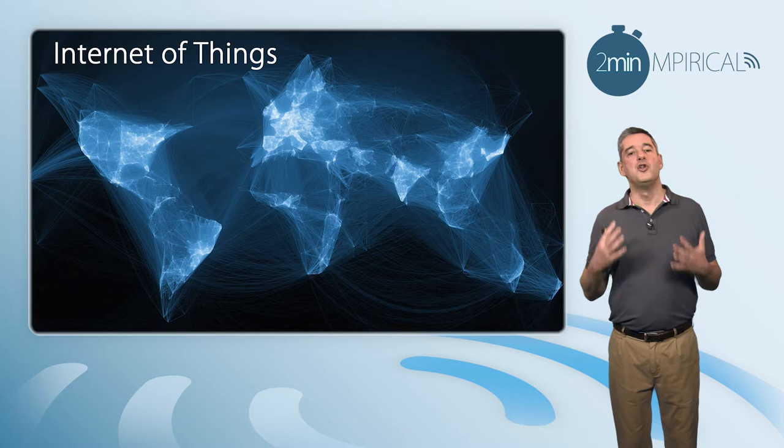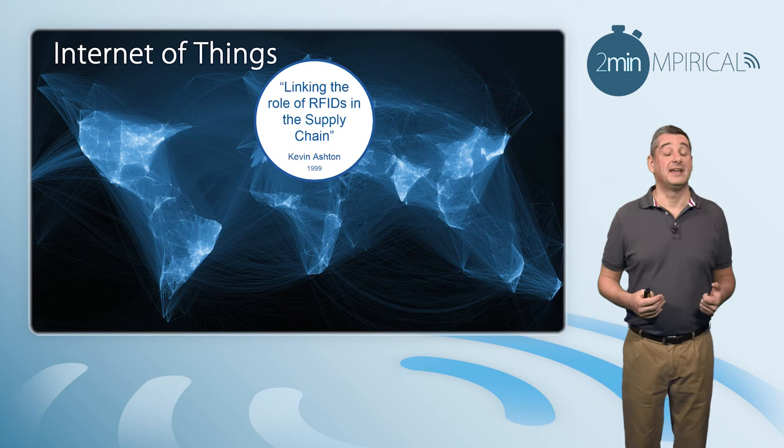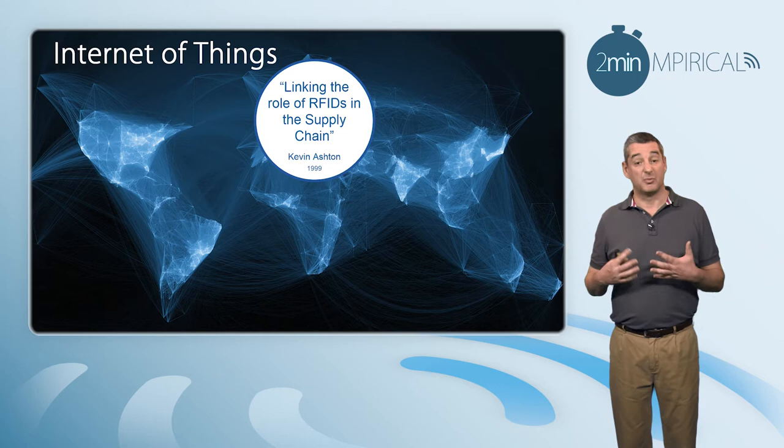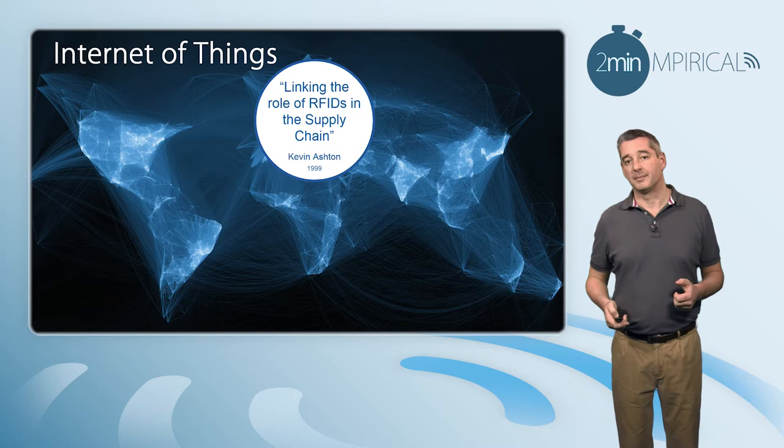The term itself was first coined back in 1999 when Kevin Ashton produced a paper dealing with the use of RFIDs in the supply chain. In other words, putting radio transmitters into products, thereby enabling us to track them from manufacture through to the consumer. We're now letting machines or things add to the data mix.